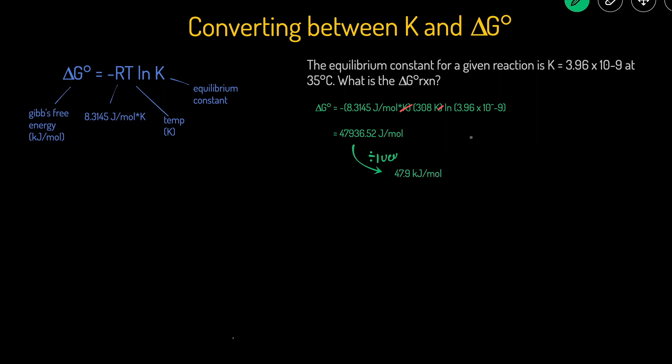Let's check if that makes sense. Our K value is much less than one, which means this reaction is reactant-favored, so we expect ΔG to be positive, and it is.